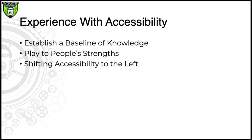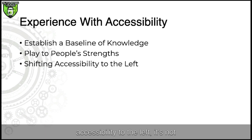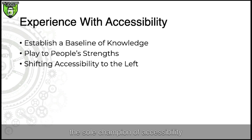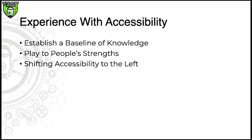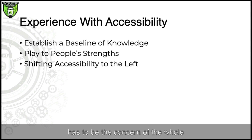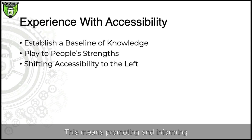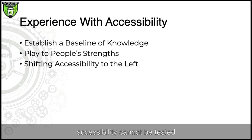Three: shifting accessibility to the left. It's not unusual for testing teams to become the sole champion of accessibility within a company. For accessibility to be a genuine priority and done with quality, it has to be the concern of the whole organization. This means promoting and informing stakeholders and leadership that accessibility cannot be tested away and needs to be a company-wide priority.